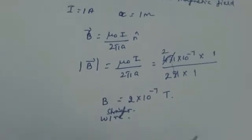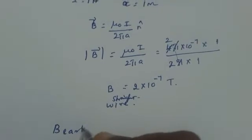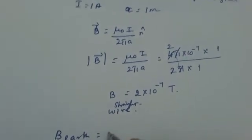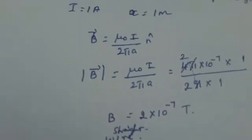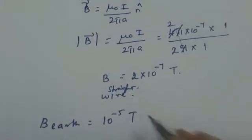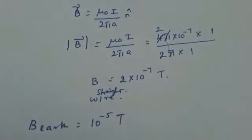Compare this with the earth's magnetic field. Magnetic field of earth is nothing but an approximate value of 10⁻⁵ tesla. When you compare these two values,